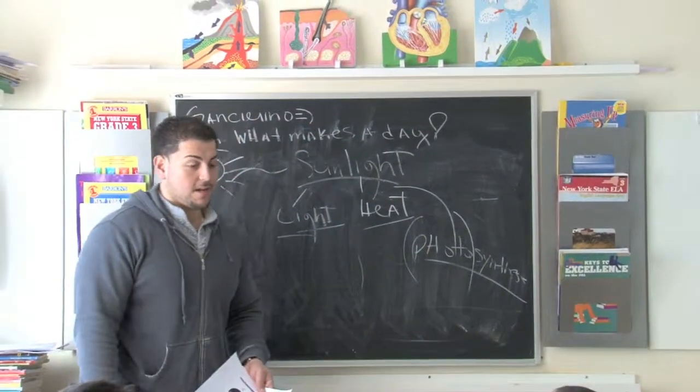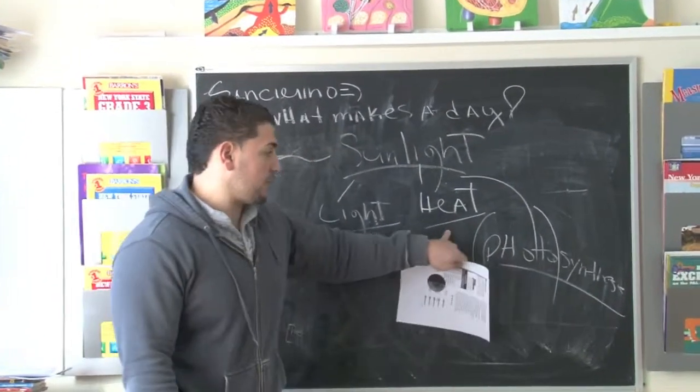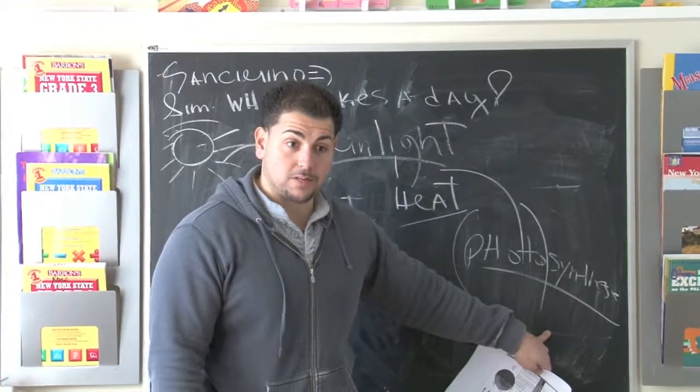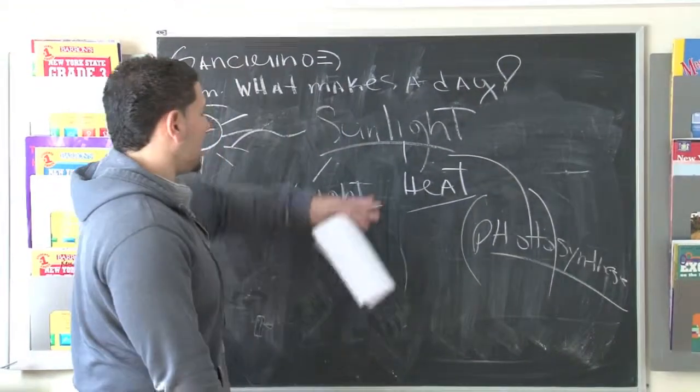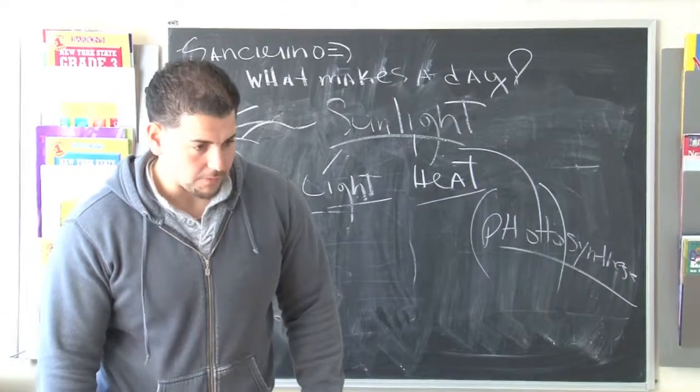Alright. So wait, we're going to get back to that. So the sun produces light. It produces heat. It helps with the process of photosynthesis. Now think about it like this. Let's say I take the sun out of the equation. Is your body built to provide you with heat? No.